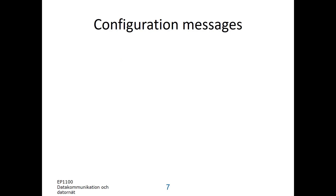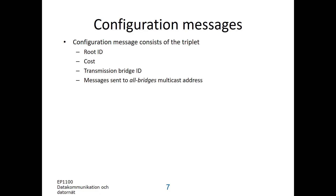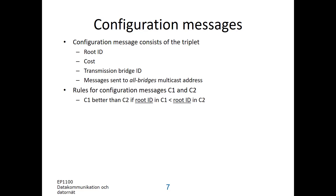Let's look at these configuration messages, which are the basis of the spanning tree computation. They consist of a triplet: the root ID, which is a 48-bit address; the cost, usually counted in hops; and the transmitting bridge ID, which is another 48-bit ID. These messages are sent to a multicast address referred to as 'all bridges', so only the bridges in the network participate in the spanning tree computation. At this point there is no traffic from the computers connected to the local area networks. There are rules for selecting which configuration message will be used at a bridge. If we have two messages C1 and C2, then C1 is better than C2 if the root ID in C1 is strictly smaller than the root ID in C2.